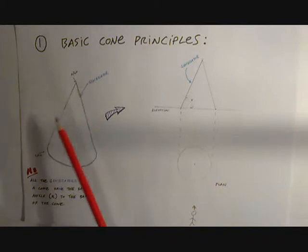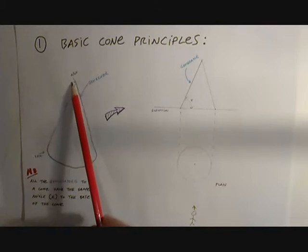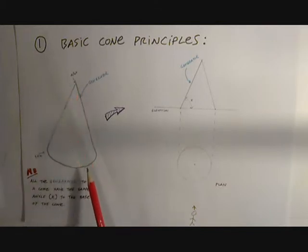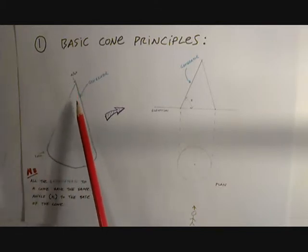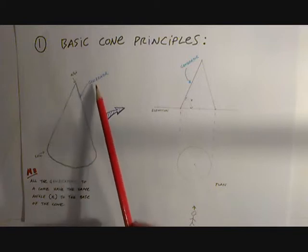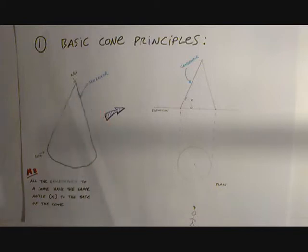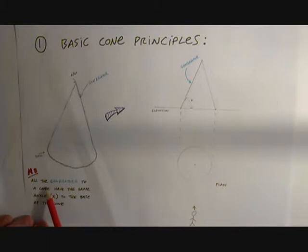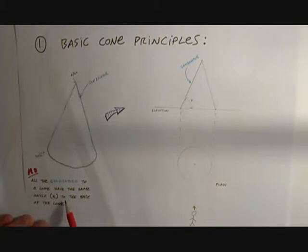Here we have a cone, and if you draw a line anywhere from the apex to the base of the cone on the surface of the cone, this is called the generator. The principle is: all the generators of a cone have the same angle x to the base of the cone.